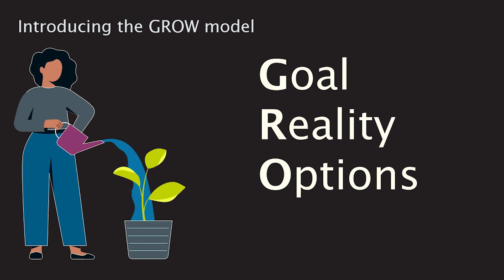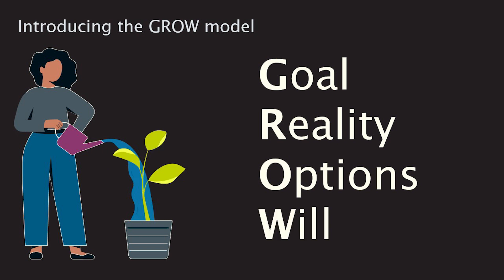The last part of the GROW model is related to your will. Which options are most important to take action on right now? How committed are you on a scale of 1 to 10 in seeing that option through to the end? When will you start taking action? What else will you commit to doing? All of these questions help you recognise your motivation level and make change happen.